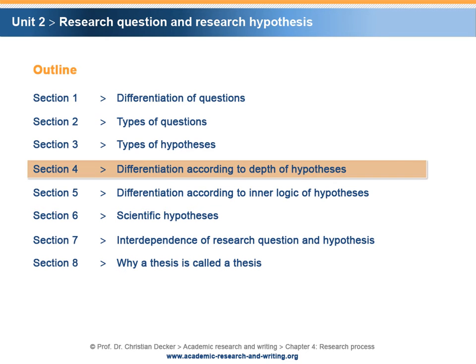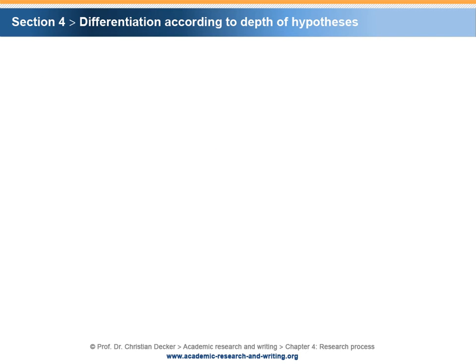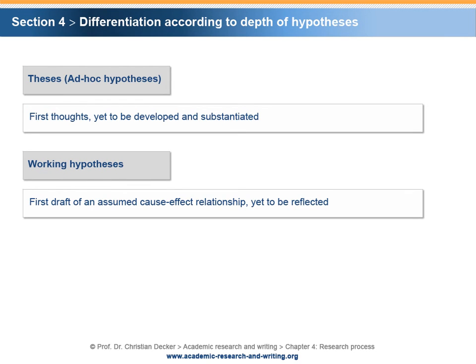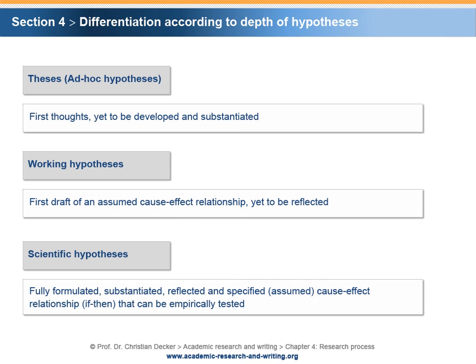Section 4: Differentiation according to the depth of hypotheses. The three general types of hypotheses differ in the depth of the hypothesis. Thesis or ad hoc hypotheses are first thoughts that remain to be developed and substantiated. Working hypotheses consist of a first draft of an assumed cause-effect relationship that has to be further reflected. Scientific hypotheses contain a fully formulated, substantiated, reflected, and specified or assumed cause-effect relationship — if-then — that can be empirically tested.